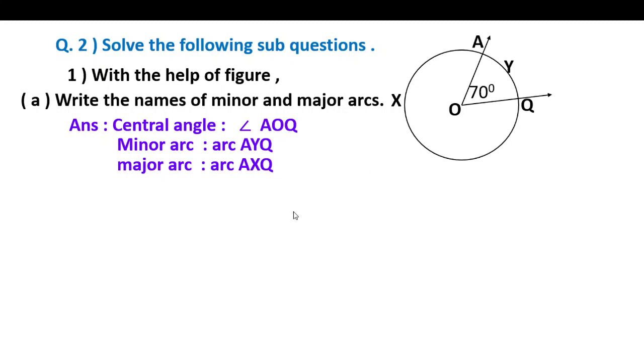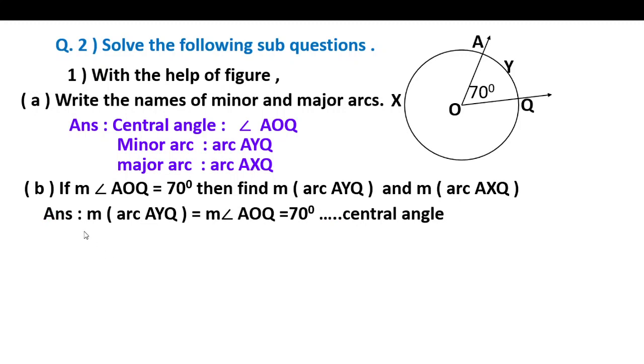Part (b): If measure of angle AOQ equals 70 degrees, then find measure of arc AYQ and measure of arc AXQ. The angle measure is 70 degrees. Arc AYQ corresponds to the central angle.